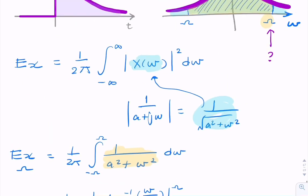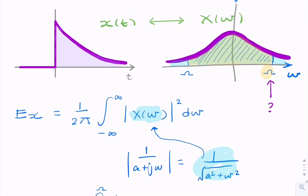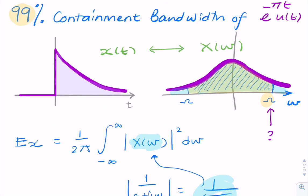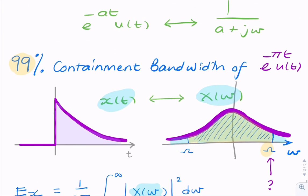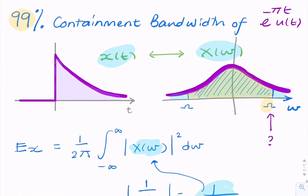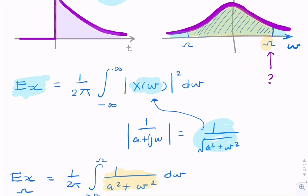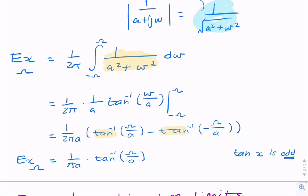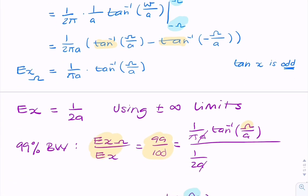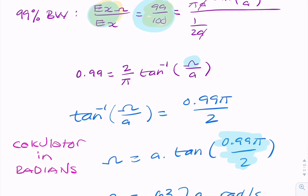So that will give us 10.1a hertz. So what we've just found is the 99% containment bandwidth for the single-sided exponential function. We did that by finding the frequency domain representation of x(t), and we started with a given Fourier pair. We then found the energy of the signal, and we found the energy between minus omega and plus omega. We found the ratio of those two energies, equated that to 0.99, and then solved for omega.